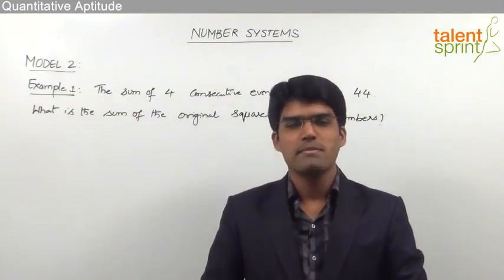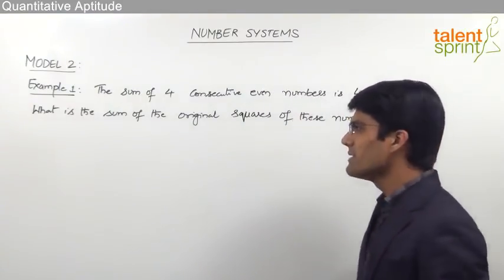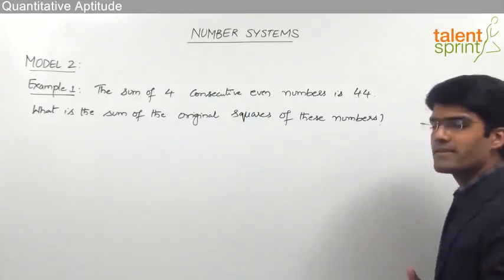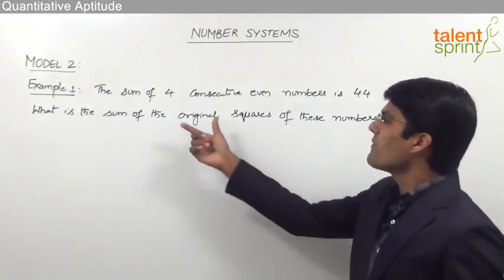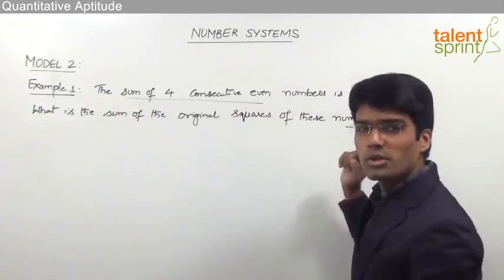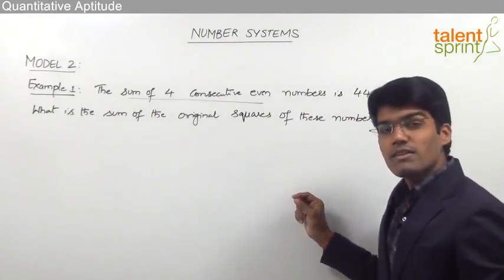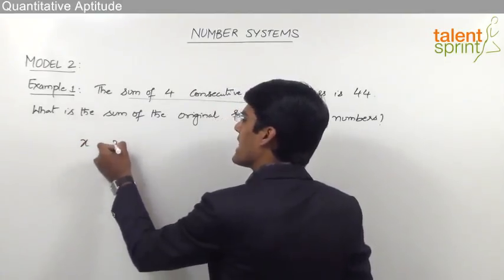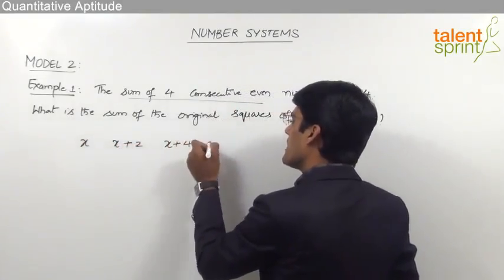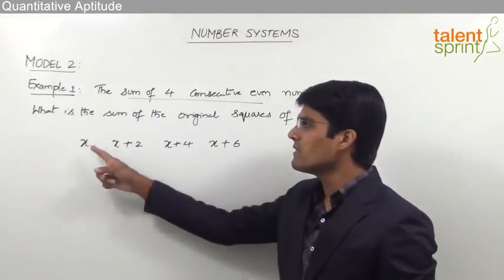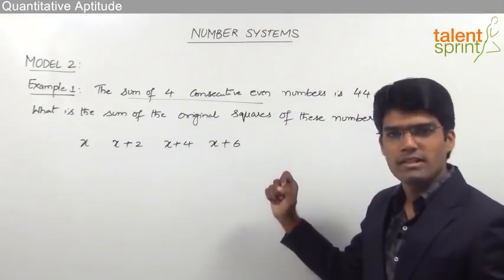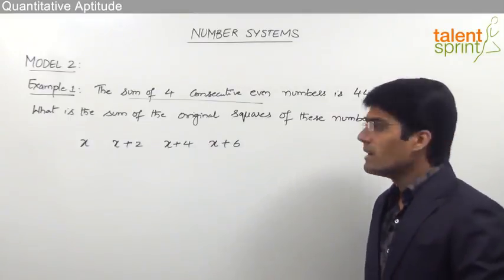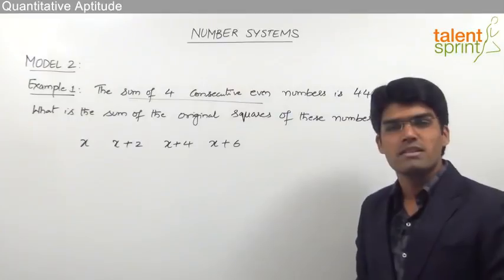Let us take the first example based on consecutive numbers. The sum of four consecutive even numbers is 44. What is the sum of the squares of these numbers? As given, let the four consecutive even numbers be x, x+2, x+4, and x+6. Since there are four numbers we take four terms, where x is even.